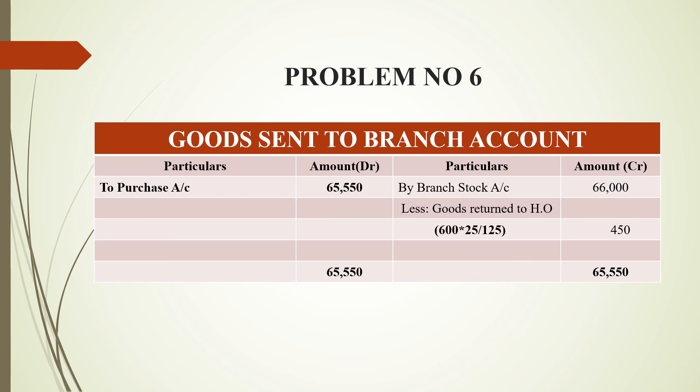For goods return to head office, we will get the invoice price. With 25% profit, we will get the balance — 25 divided by 125 — so that is 450. Now we get 65,550, which has to be transferred to the purchase account, then manufactured to the trading account. That is why we will get the purchase account transferred to the trading account.